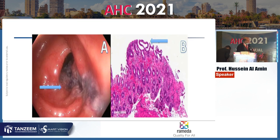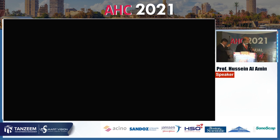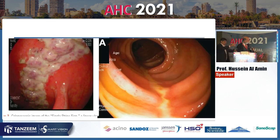The single stripe sign represents a longitudinal ulceration that is considered a specific colonoscopic finding in ischemic colitis.